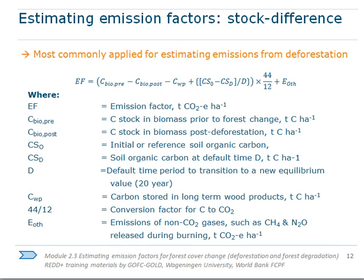After a disturbance, soil releases carbon gradually over a number of years. For this reason, the carbon stock change from soil is divided by the factor D, which represents the number of years.